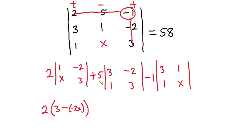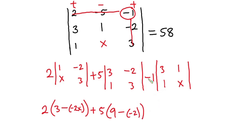Now for the second term: we have 5, and 3 times 3 is 9, then minus 1 times negative 2 is negative 2, giving 5 times (9 minus negative 2). For the third term: we have negative 1, and 3 times x is 3x, then minus 1 times 1 is 1, giving negative 1 times (3x minus 1).